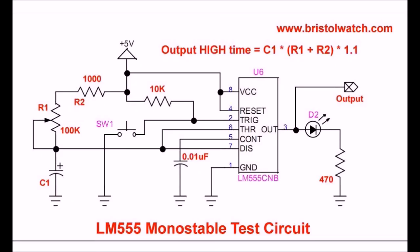In this video we're going to learn about the LM555 monostable multivibrator, the circuit you see in this schematic. We are going to discuss its operation, then we're going to use it with a zero crossing detector and a triac circuit to control AC power. This will give you an idea how these work and how an industrial control system might work.